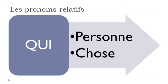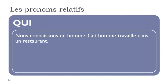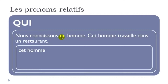'Qui' can be used whether for a person or a thing — for a person it means 'who'. The first example is for une personne. We take: 'Nous connaissons un homme' and 'Cet homme travaille dans un restaurant.' If we look carefully, we repeat 'un homme' / 'cet homme', so we can combine these two sentences.